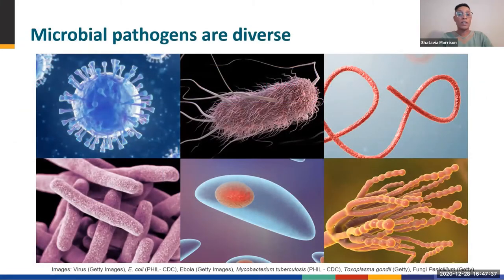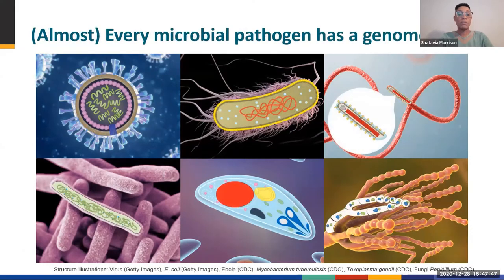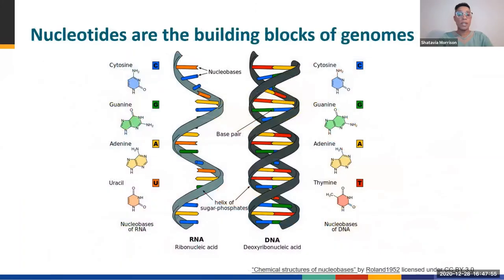Microbial pathogens are diverse and come from all domains of life. They include many taxa, such as viruses, bacteria, and fungi. Fundamental to our discussion is that almost all microbial pathogens encode their genetic material in genomes. Those genomes can be comprised of either RNA, shown on the left, or DNA, shown on the right.